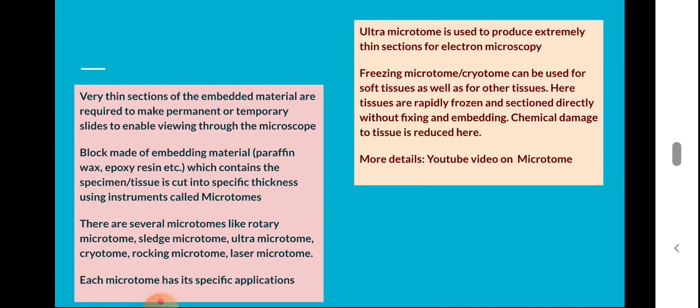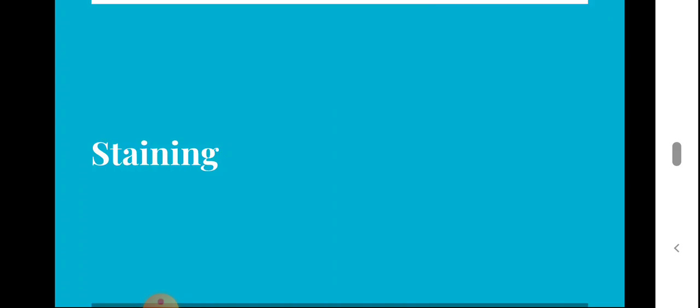The ultra microtome is used to produce extremely thin sections for electron microscopy. The freezing microtome, or cryo microtome, is used specifically for soft tissues — here the tissues are rapidly frozen and sectioned directly without fixing and embedding, so chemical damage to the tissue is reduced. More details about microtomes can be found in a previously posted YouTube video.